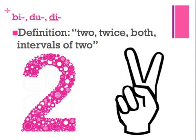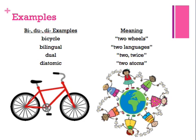Let's take a look at some examples. First, bicycle, which means two wheels. The second example is bilingual, which is two languages. The third example is dual, which means two or twice. And the final example is diatomic, which means two atoms.